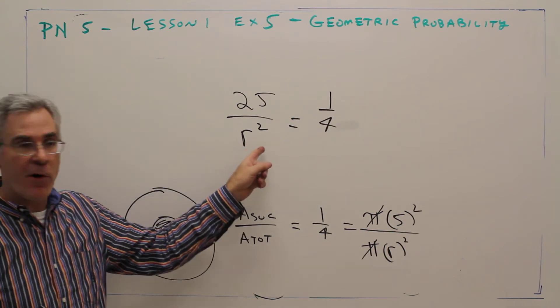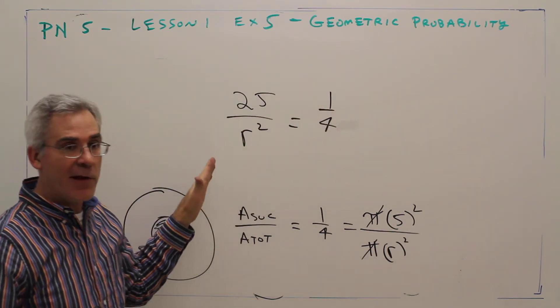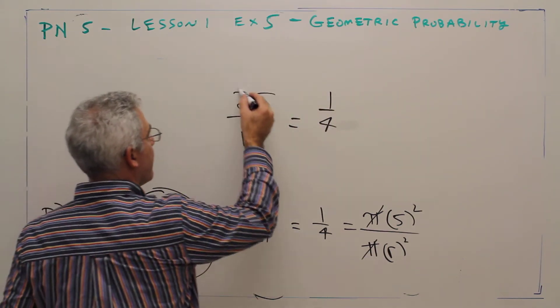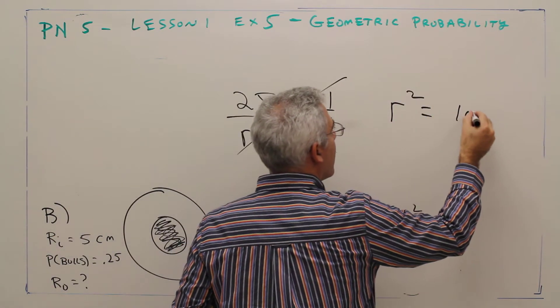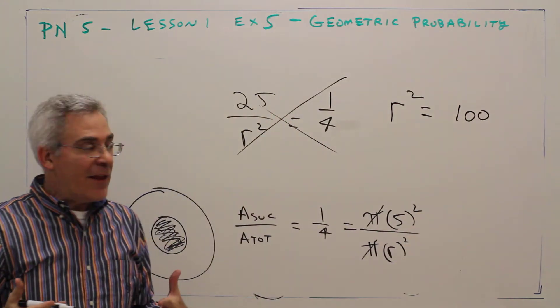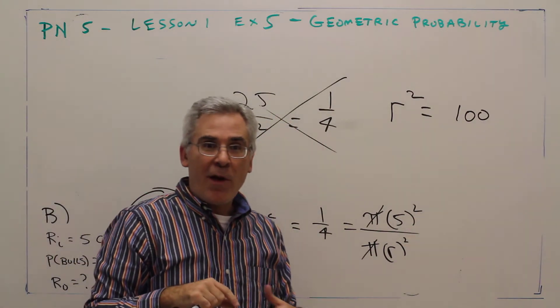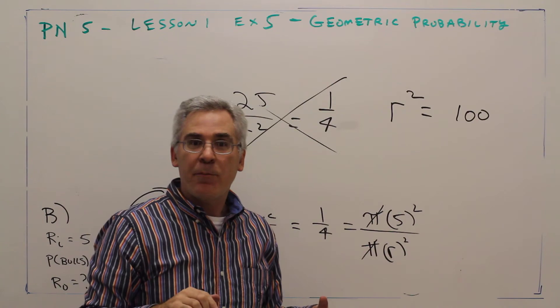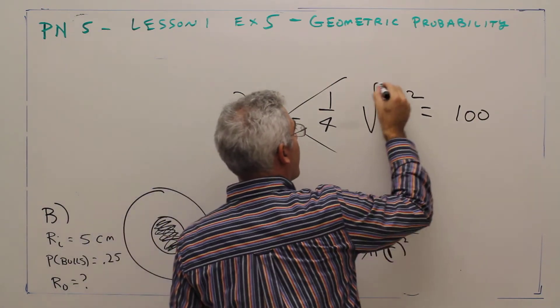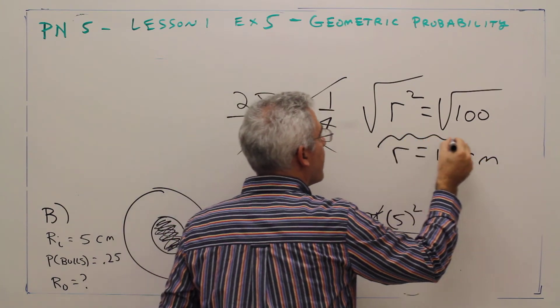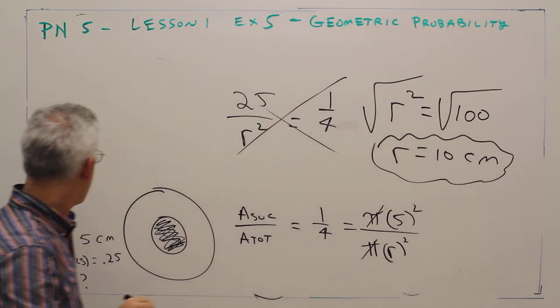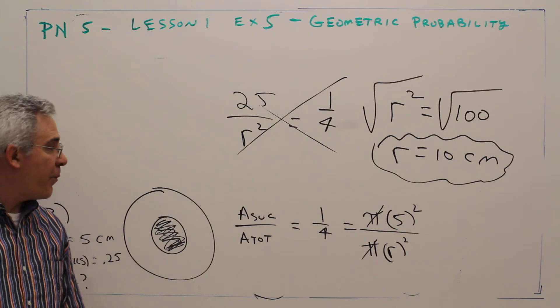I'm solving for r squared. I'll simply cross-multiply and get r squared to equal one hundred. I'll take the square root. I won't worry about plus or minus square roots because the radii can't be negative. So r is ten centimeters. That's the answer for part B.